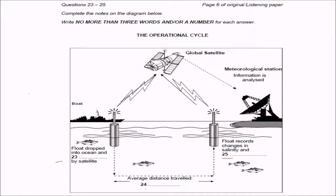But let's move on to how floats work. The operational cycle goes like this. Each of the floats is dropped in the ocean from a boat at a set point and activated from a satellite. Then the float immediately sinks about 2,000 meters. That's two whole kilometers down in the water. It stays at this depth for about 10 days and is carried around by the currents which operate in the ocean at this level.